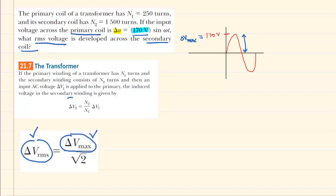Of course, there's a nice equation that gives us this value for the transformer. We can see that the potential difference in the secondary coil is equal to the number of turns in the secondary coil divided by the number of turns in the primary coil times the potential difference of the primary coil.